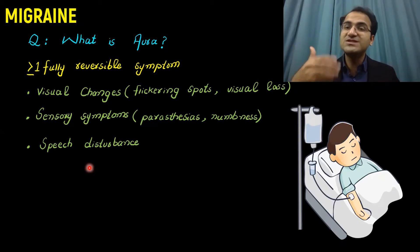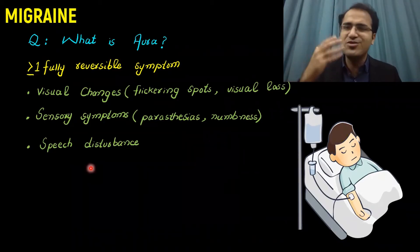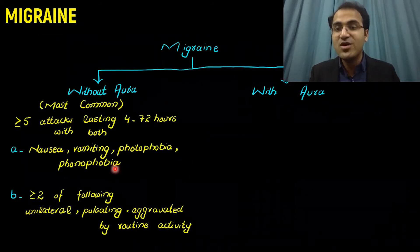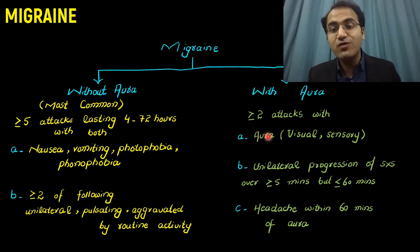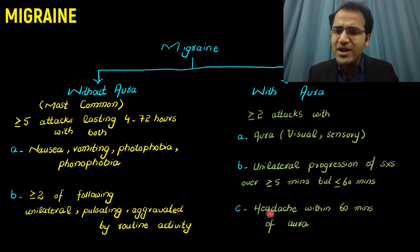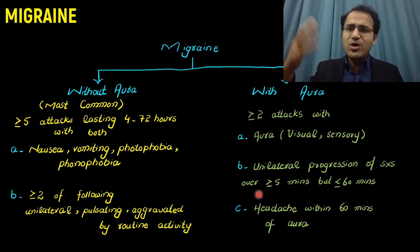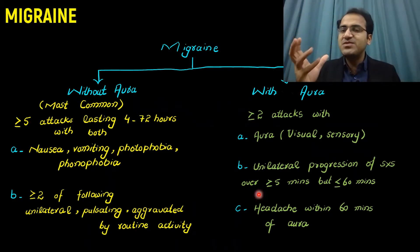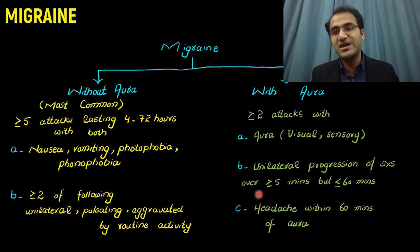There can also be sensory symptoms like paresthesias or numbness in the limb, or speech disturbance. These are all reversible neurological symptoms that present as aura in migraine. Usually they precede the headache — before the start of the headache, patients experience an aura, and after that they have the throbbing unilateral headache. Migraine with aura is defined as two or more attacks with features in A, B, and C: aura (visual or sensory), unilateral progression of symptoms over five or more minutes but less than 60 minutes, and headache within 60 minutes of the aura.